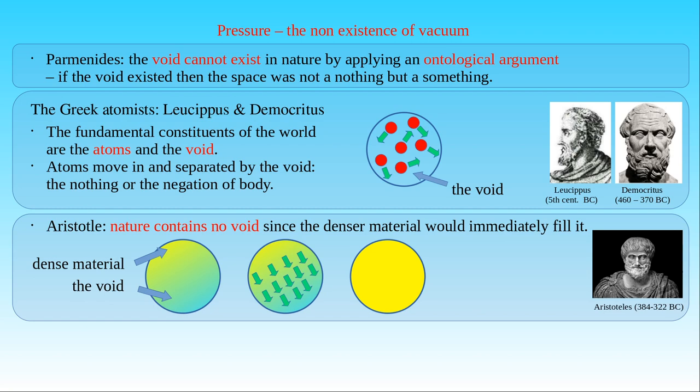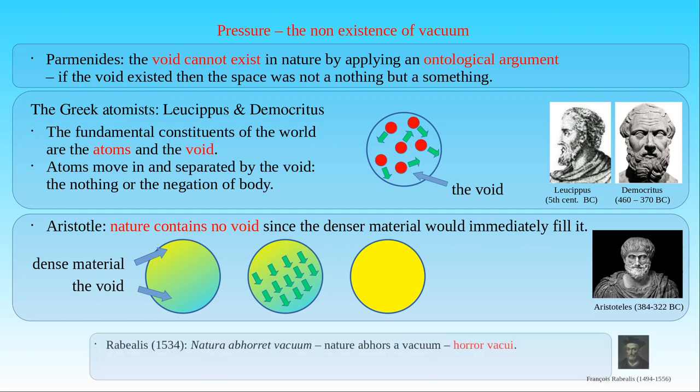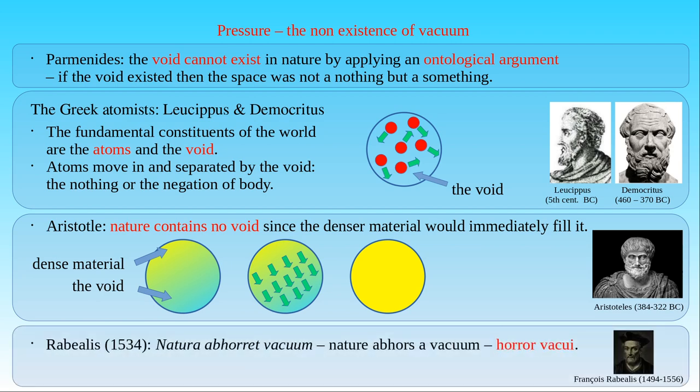Aristotle's view on the non-existence of vacuum was supported throughout the scholastic tradition, and his tenet was rephrased in the Latin sentence "Natura abhorret vacuum," or "Nature abhors a vacuum," by François Rabelais, a Renaissance physician and scholar in his famous novel Gargantua and Pantagruel. Later on, this principle was known as Horror vacui.